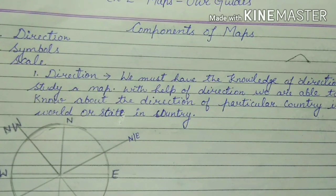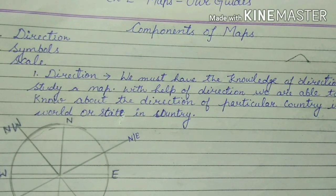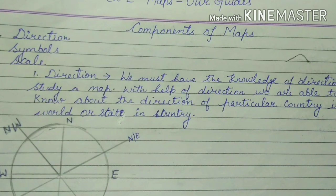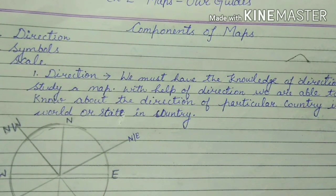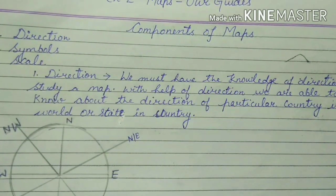With the help of direction, we can find out which countries are northern countries, which are southern countries, and which are eastern countries. With the help of direction, we are able to know that a particular country is a northern country or an eastern country. Similarly, we can know which state is on the south side, north side, or east side — like we say Tamil Nadu is in the south, and we find that with the help of direction.